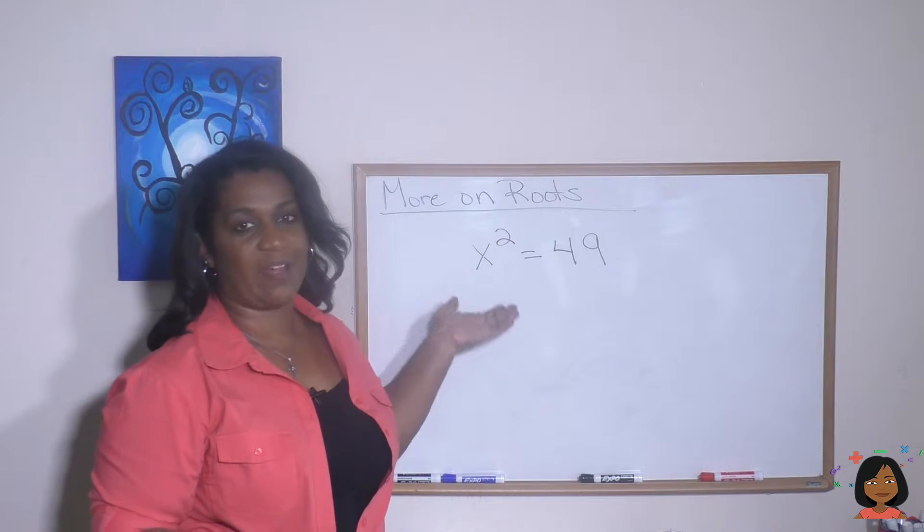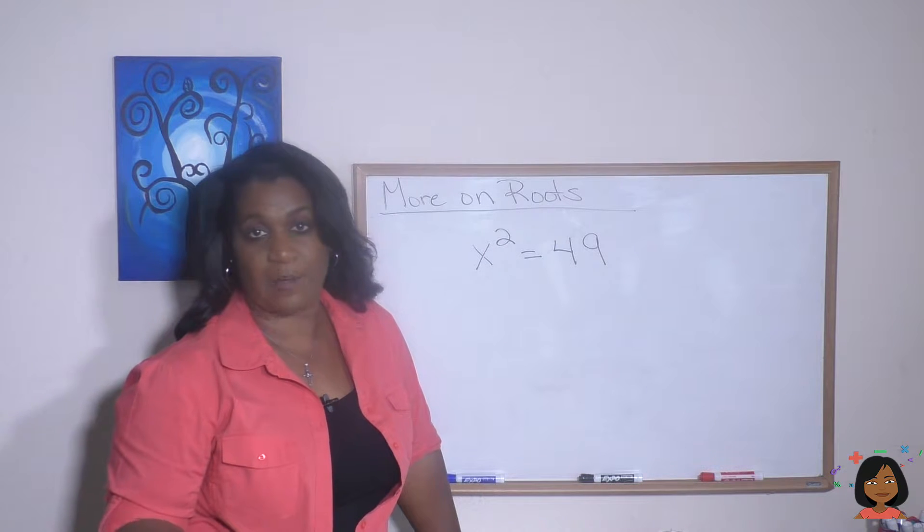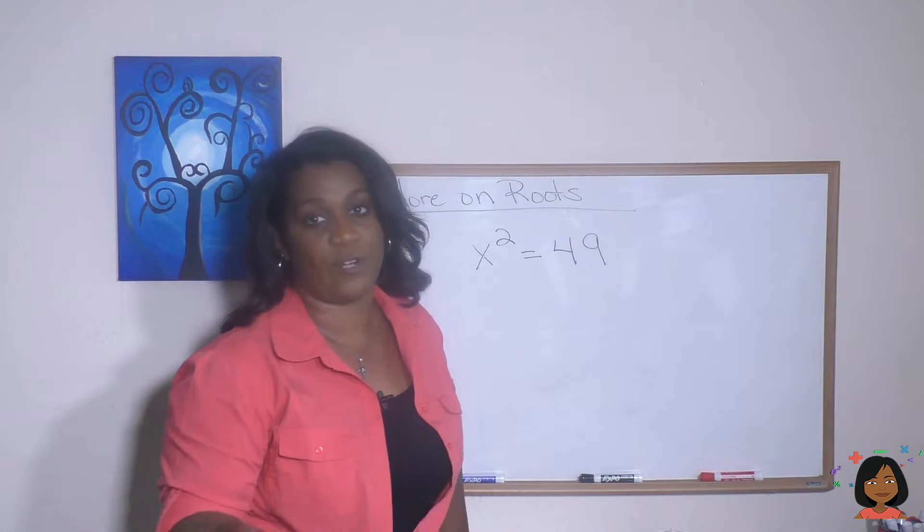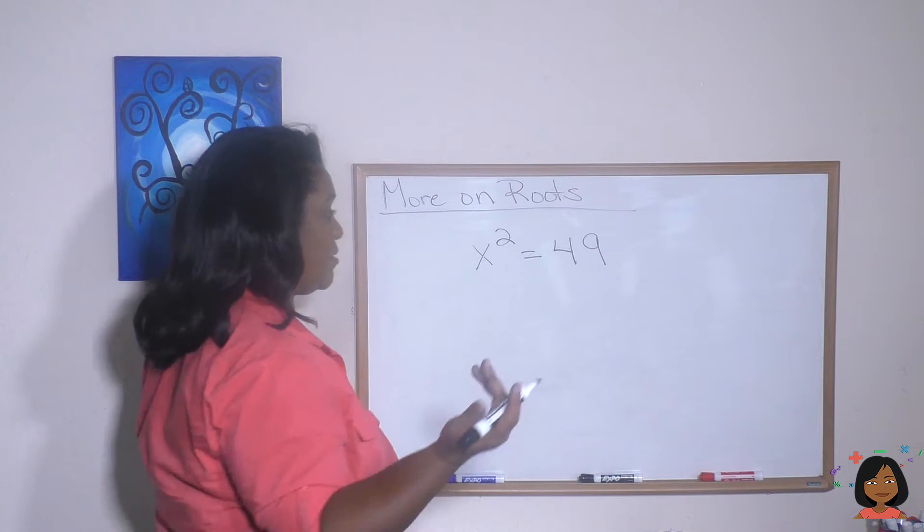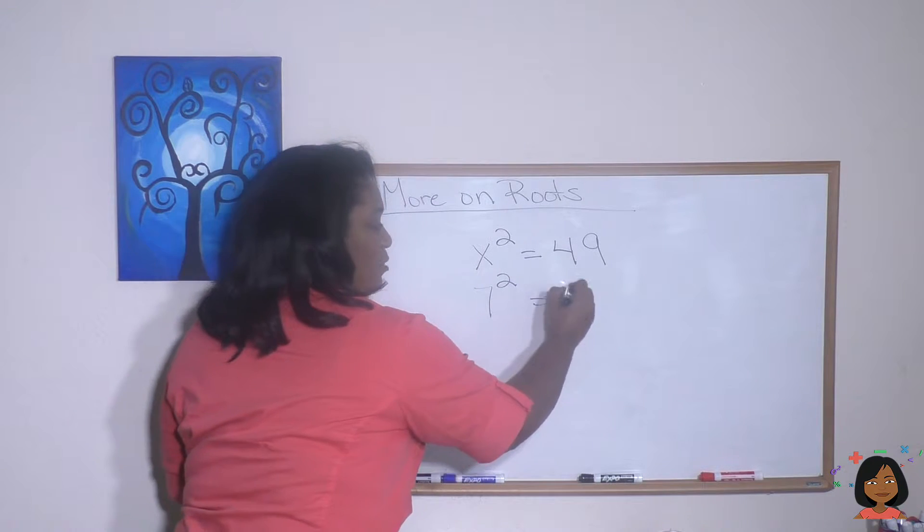So we have x squared equals 49. Well, I want you to think about what number times itself equals 49, and you're probably saying 7, right? 7 squared equals 49.